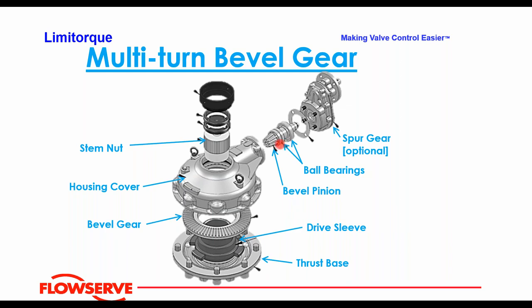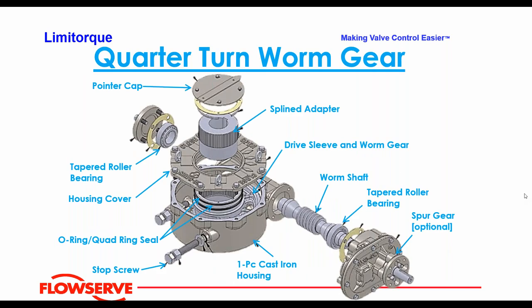In the multi-turn bevel gearbox you have the bevel pinion and the bevel gear which drives the drive sleeve — typically used for automating multi-turn sluice and slide gates. The quarter-turn worm gear is mainly for ball, plug, and butterfly valves; this one is shown with the optional spur gear. It has travel stops for end of travel, and again these gear types can be coupled with electric actuators to gain mechanical advantage.